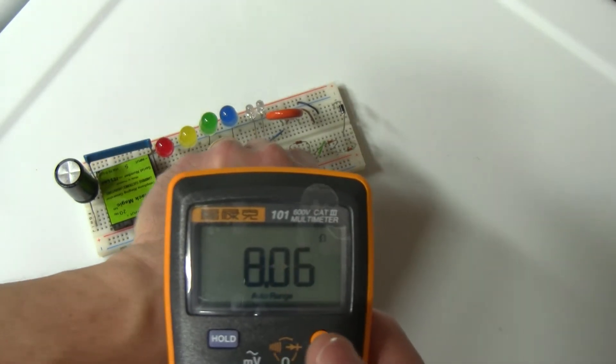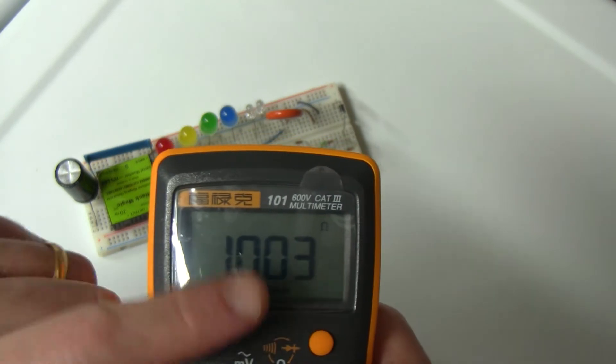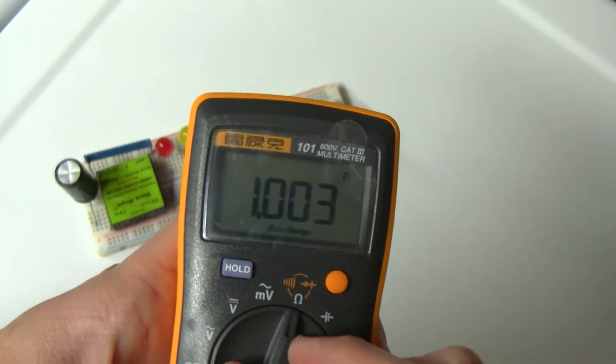It shows 1k nicely, same thing. And I tested it across the range, so this is not working. There's a defect on this meter.